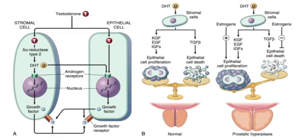We're going to discuss a brief conceptual understanding of benign prostatic hyperplasia. We tend to skip the pathogenesis of BPH, so I thought we'd understand it. This is a simple flowchart from Robbins, and everything revolves around testosterone — especially the better-known product of testosterone, dihydrotestosterone.